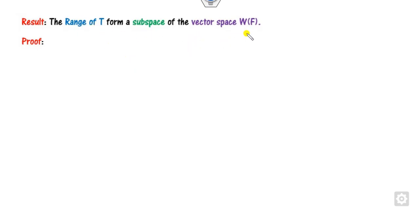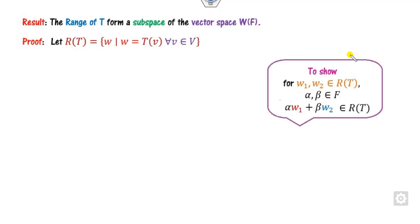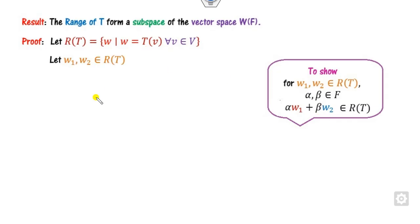First of all, note that the range of T forms a subspace of the vector space W. That is the definition of the range space — the collection of all those W's in the range. To show it is a subspace, if you take two elements from the range, you have to show their linear combination is also in the range.